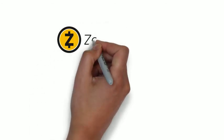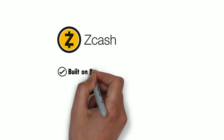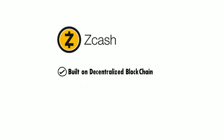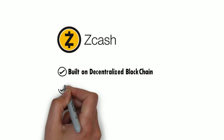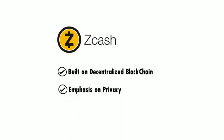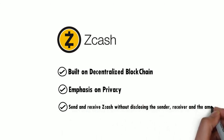7. Zcash. Zcash is a digital currency that was built on the original Bitcoin codebase. Conceived by scientists at MIT, Johns Hopkins, and other respected academic and scientific institutions, it was built on a decentralized blockchain. A core feature and differentiation of Zcash is an emphasis on privacy — users can send and receive Zcash without disclosing the sender, receiver, or the amount transacted.